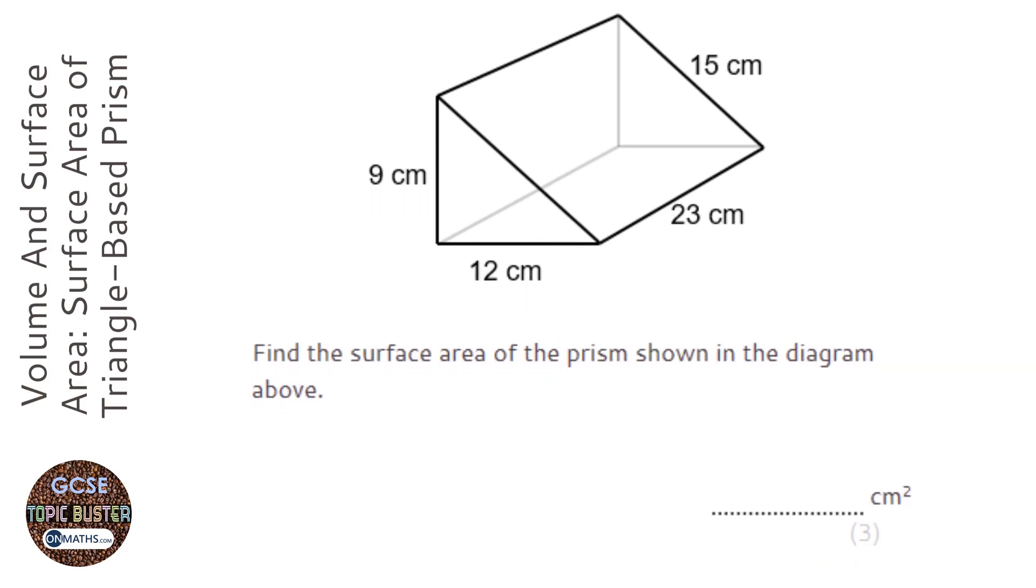We're asked to find the surface area of this triangular base prism. First of all, for surface area, it's if you wrapped it up with wrapping paper, it would be the area of the wrapping paper you'd need. So we've got to figure out what shapes are in this triangular base prism.